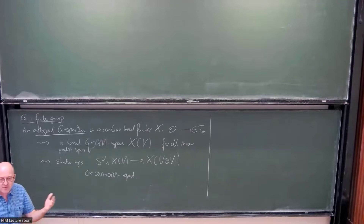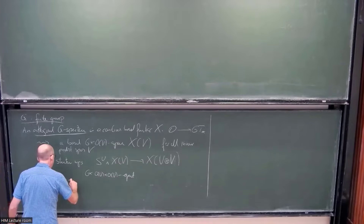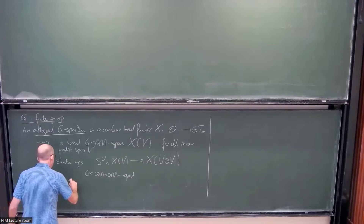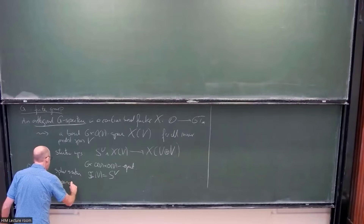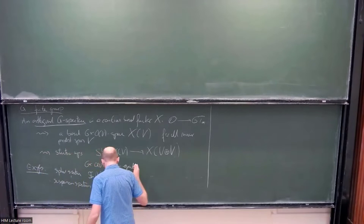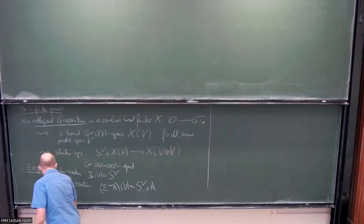The functor approach is convenient because you immediately get complete and co-complete categories, you have limits, and easy constructions for new examples. I discussed a bunch of examples last time. Let me briefly mention them again. First, the sphere spectrum, denoted S, whose value at an inner product space V is the one-point compactification. I won't repeat the structure maps. There's also the suspension spectrum: for a based G-space A, sigma-infinity of A evaluated at V is the smash product of A with S^V.